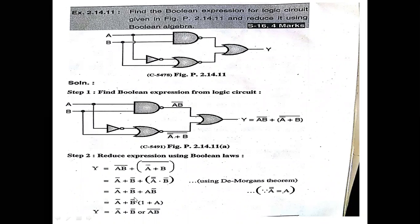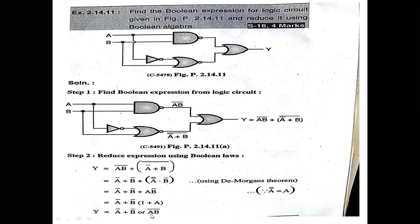Next, B bar is a common factor in A bar plus B bar and A into B bar. Taking B bar common: B bar times (1 + A). Since 1 plus A is always 1, the equation simplifies to Y = A bar plus B bar, which by De Morgan's theorem is nothing but A into B bar.